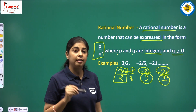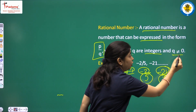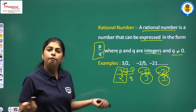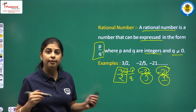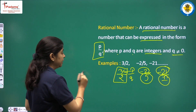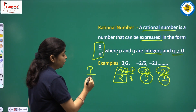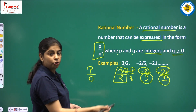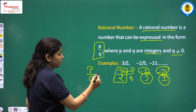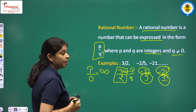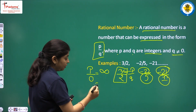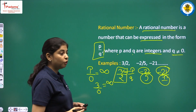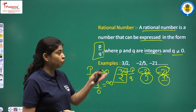In our definition, it is written that Q should not be equal to 0. Why should Q not equal 0? If we divide any number P by 0, we get an undefined number. For example, 3 divided by 0 gives an undefined number — something with no definition. That is why Q should not be equal to 0.